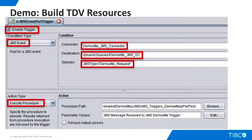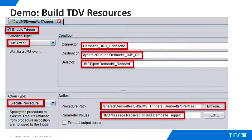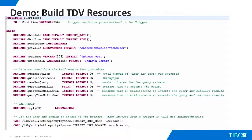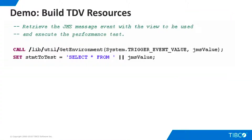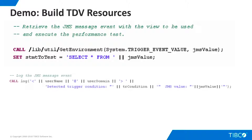For action type, select Execute Procedure. Browse to the procedure path of the pperf test script. We'll use this text string as a parameter for the script. Now let's flesh out the SQL script. First, we'll define the variables we need for logging and for calling the performance testing procedure that is the heart of our use case. The call to get environment returns the payload of the JMS message. Our use case calls for this payload to be the fully qualified name of a TDV view. We plug this view name into a select statement. Logging is a great way to test and debug a script; log entries are written to the TDV server log in the TDV logs directory.